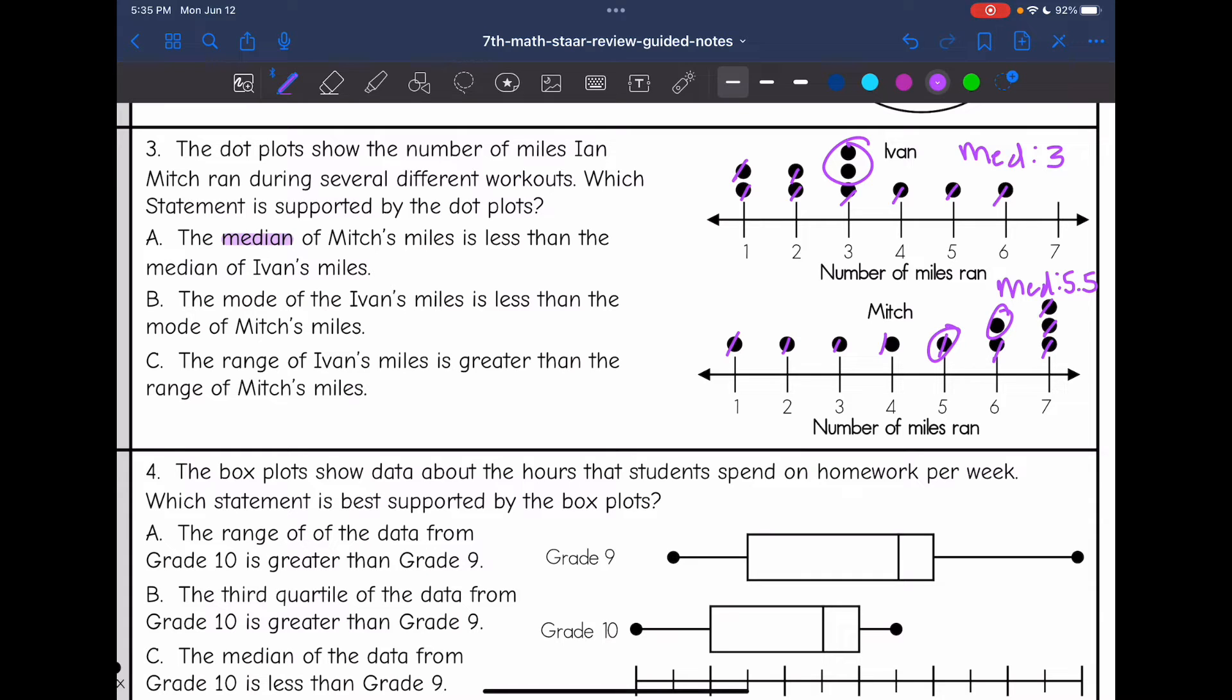So A said the median of Mitch's miles is less than the median of Ivan's miles. That is false. Mitch had a higher median. So let's go to B.